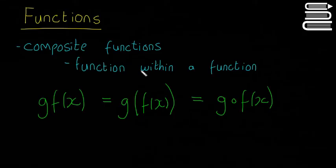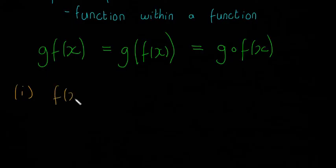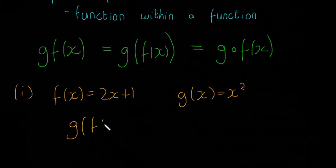The best way of seeing what I mean by a composite function or a function within a function is with an example. I'll start with this example here: f of x is equal to 2x plus 1 and g of x is equal to x squared, and we want to find out what g of f of x is. Basically we need to sub 2x plus 1, because that's f of x, into g of x. So everywhere there was an x in g of x we're now going to have 2x plus 1.